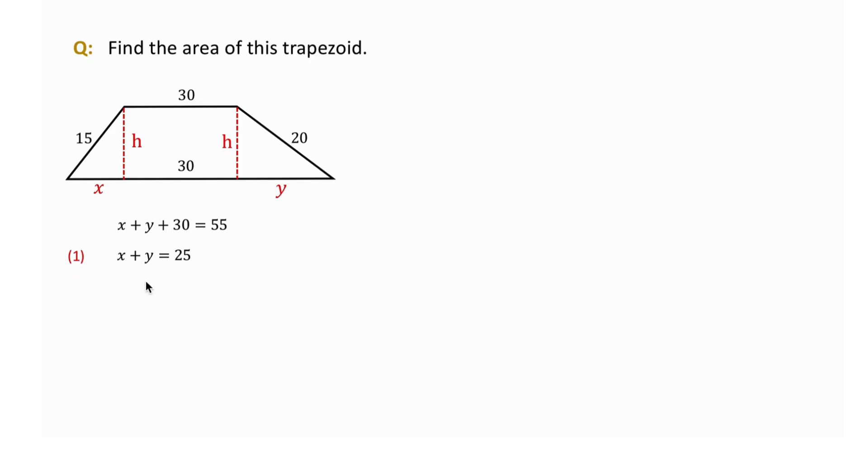Now look at the left triangle. Using the Pythagorean theorem, x squared plus h squared equals 15 squared, which is 225.